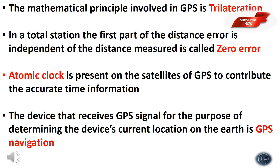The first part of the distance error, which is independent of the distance measured, is called the zero error. The atomic clock is present on the satellites of GPS to provide accurate time information. The device that receives GPS signals for determining the device's current location is called a GPS navigation receiver.